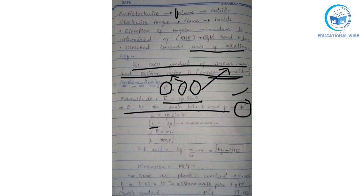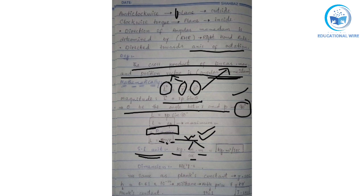Since p = mv (formula for linear momentum), we replace p with mv and get the angular momentum formula L = mvr. Now for the SI unit: mass m has unit kilogram, velocity v has unit meter per second, and position vector r has unit meter. So kilogram × (meter/second) × meter gives kilogram meter squared per second as the SI unit of angular momentum.